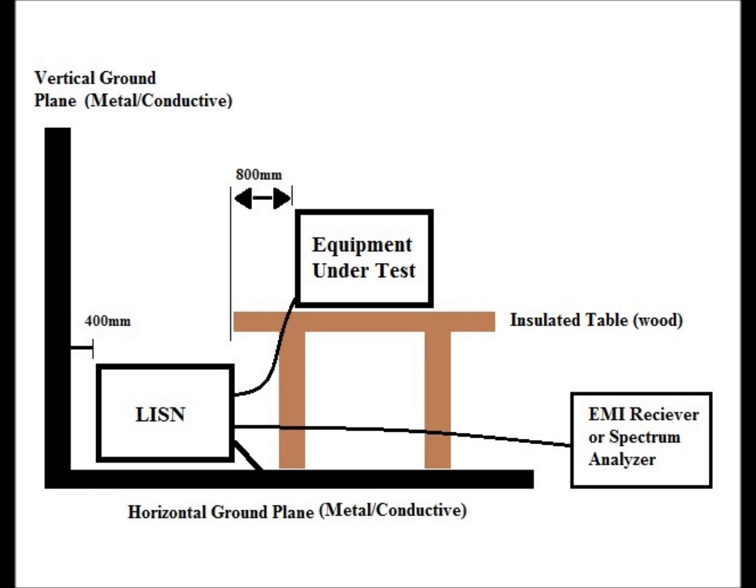We also want the EMI receiver or spectrum analyzer to be off of the horizontal ground plane, located a distance away — typically in the next room or away from the equipment under test. We basically want to minimize any capacitive coupling and any interference from other equipment with the EMI receiver and the equipment under test. The idea of using the LISN is that we want to read only the conducted emissions coming out from the equipment under test.